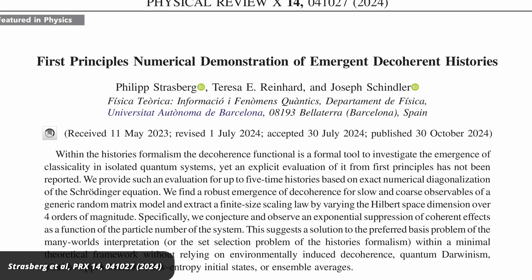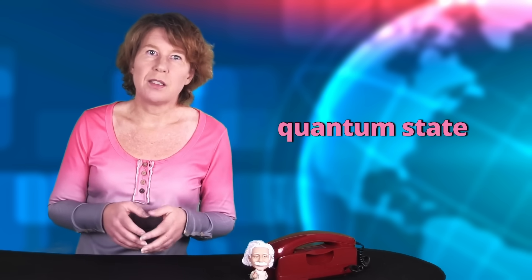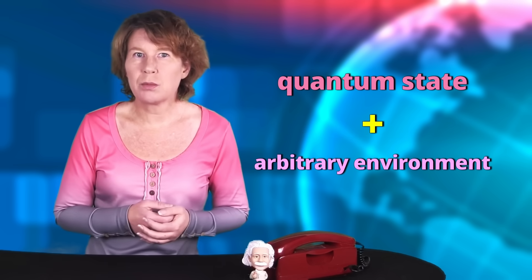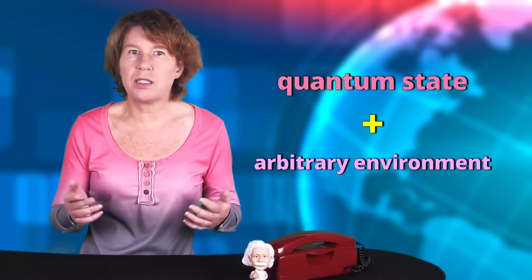And this is where the new paper becomes relevant. Because the authors say that they've solved this problem. They say they've found a way in which a system that's combined of a quantum state, that would be the dead and alive cat and an arbitrary environment, unambiguously selects the states that we actually observe.